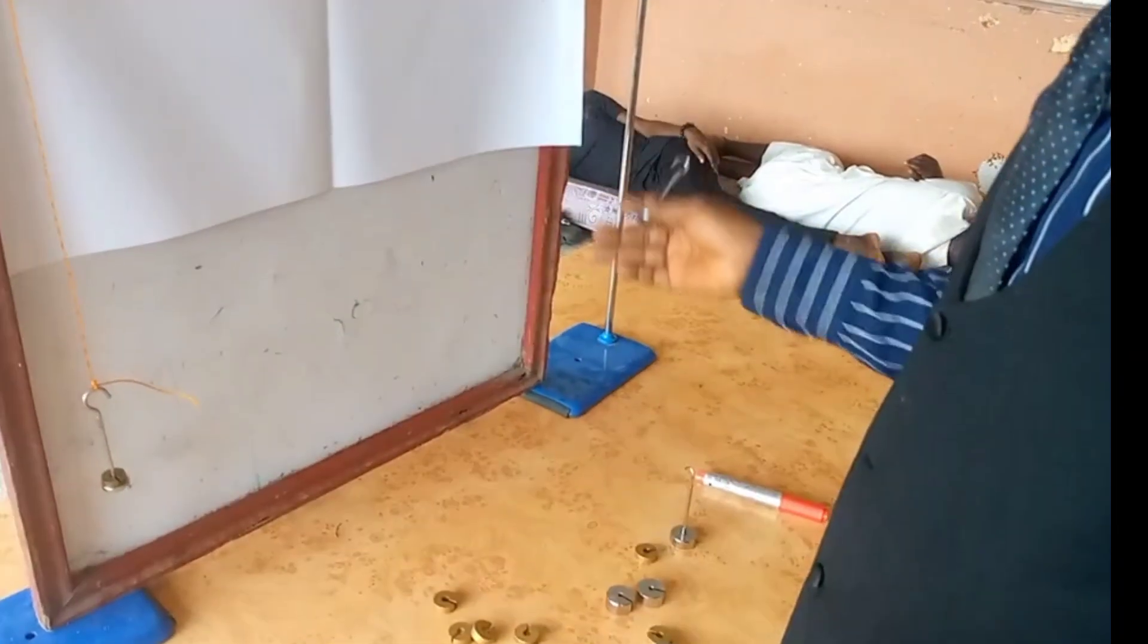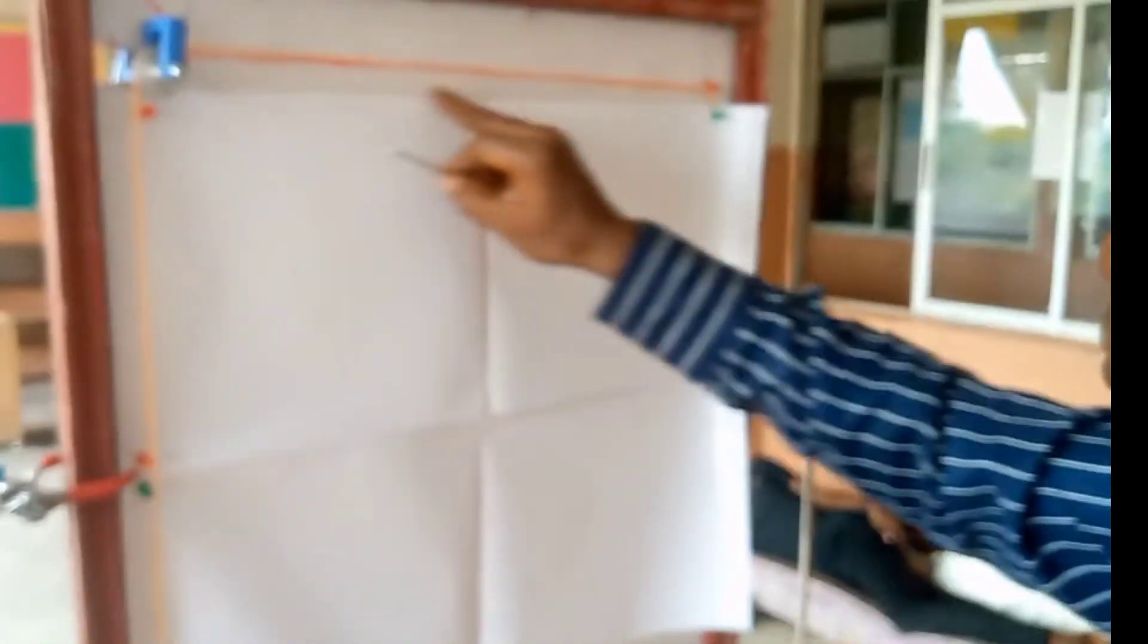So for instance, they said we should provide different masses. So this one is 20. You can see the length now. See the length.